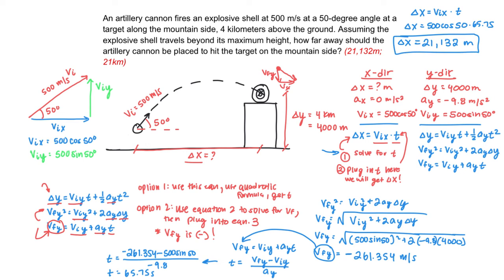Awesome. So to recap, always begin by drawing a diagram and writing down all of your given information in both the X and the Y direction. And I highly suggest that you make a table like I did on the right-hand side of this problem and split everything up into X and Y. Also, make sure that you split your initial velocity into X and Y components and only use those components when you're solving.